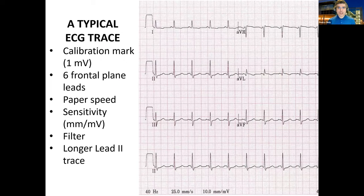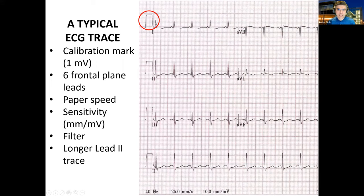Every single ECG should have some important markings, whether computer-based or paper-based. The first marking is the calibration mark, which indicates the sensitivity of the equipment detecting electricity from the heart. Here we see a marking of 1 millivolt, which is 10 millimeters — 10 little boxes — showing 1 millivolt in amplitude. Sensitivities can be twice as big or half of this, depending on the size of the QRS complexes on the ECG.